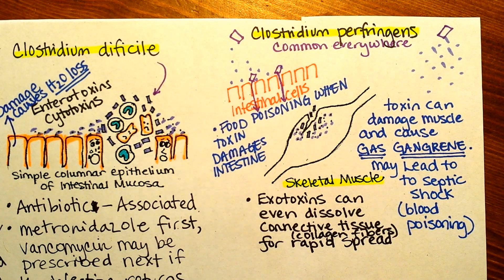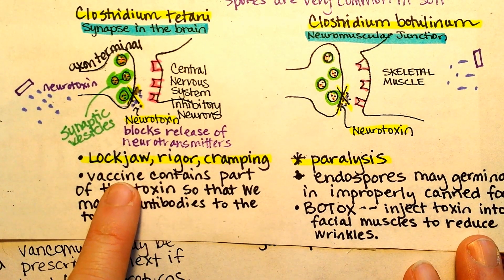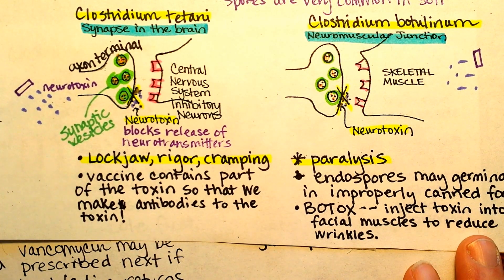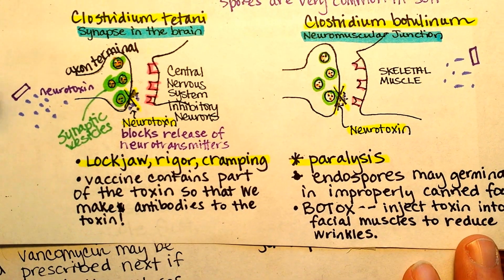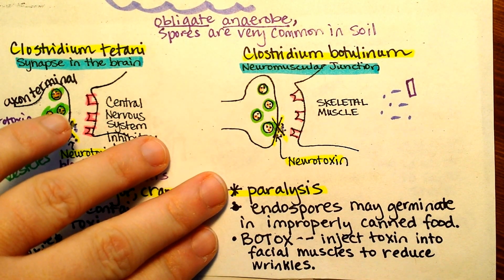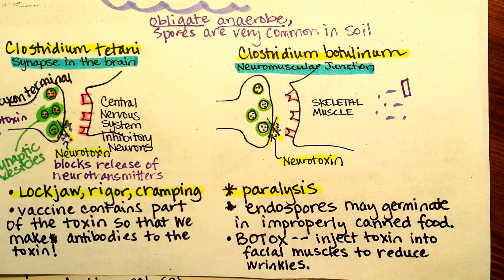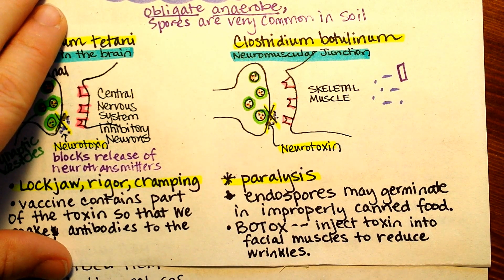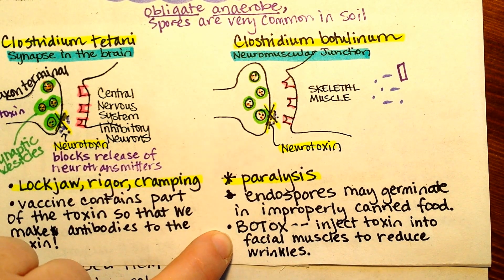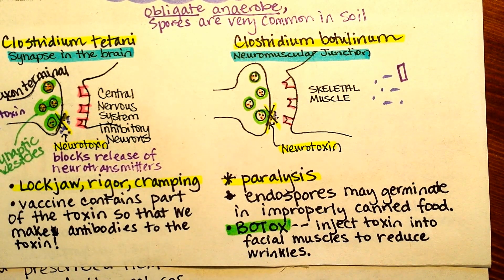We do have a good vaccine for Clostridium tetani, and the vaccine contains part of the neurotoxin. Our bodies are best able to make antibodies to proteins, so that's probably why this is a fairly effective vaccine. You would think we could make a vaccine for botulinum the same way. Some students have mentioned that military personnel are sometimes given a vaccine for Clostridium botulinum — it's probably very expensive to produce, so they might only give it to people at high risk going into certain environments.